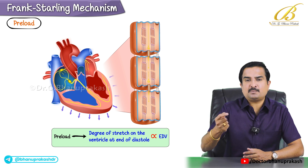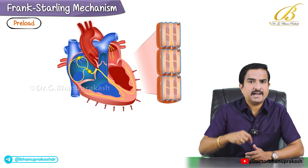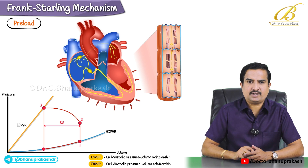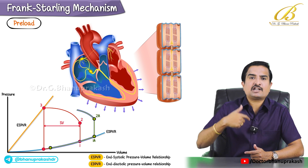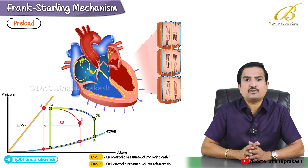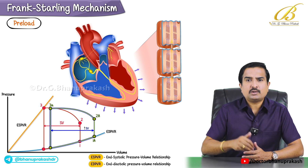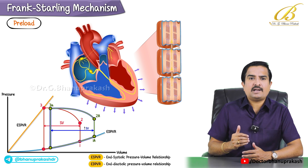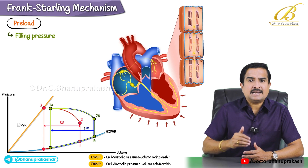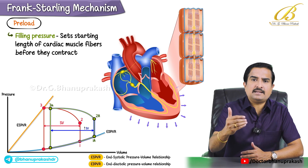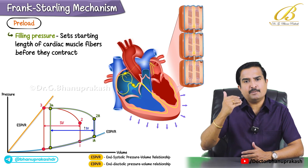When you increase preload — for example, by increasing venous return — you get a corresponding increase in stroke volume up to a point. Preload is the filling pressure that sets the starting length of the cardiac muscle fibers before contraction.